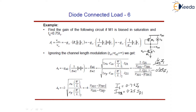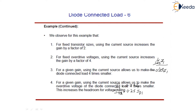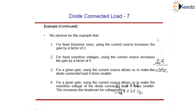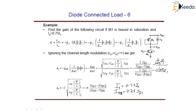From this example we observe that for a fixed transistor size — where W/L1 is fixed for both the device and the diode-connected load — using only the current source IS increases the gain by a factor of 2. For a fixed overdrive voltage, the gain increases by a factor of 4.